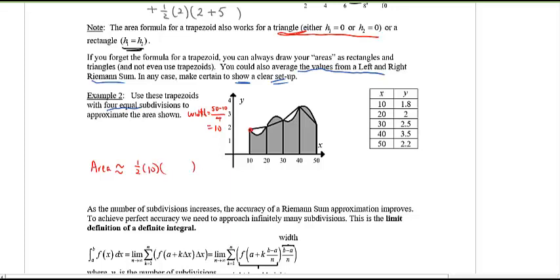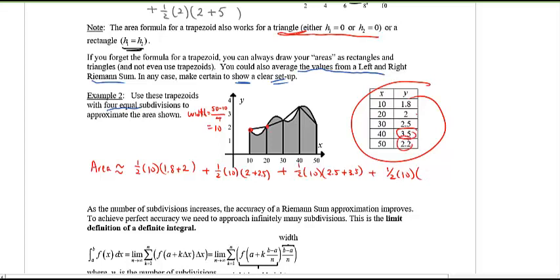I'm going to use the approximation sign. 1 half times 10. And for the first one, I'm looking at these n values. And you're like, I can't see them. You're right. But there is a table. So use the values in the table from 20 to 30. Once again, the width is still 10. But now I'm going to use the height at 20, which is 2. The height at 30, which is 2.5. Keep going. 1 half times 10. It's going to be 30 to 40. So 2.5 plus 3.5. And then the final trapezoid using the corresponding final values of 3.5 and 2.2.